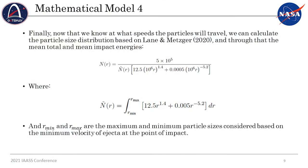Now that we have all these pieces, the final part we need to consider is the particle size distribution. For this, we used Metzger's work from 2020, the equations shown here. This is important because we need to know how big the particles are that are hitting your spacecraft — there's a big difference between being hit by a one-centimeter particle and a ton of one-micron particles, for example. In this normalization constant, R-min and R-max are the minimum and maximum particle sizes considered for any arbitrary distribution. Now, to talk about the model-based systems engineering approach, I'm going to hand it off to my colleague, Sean Butz.